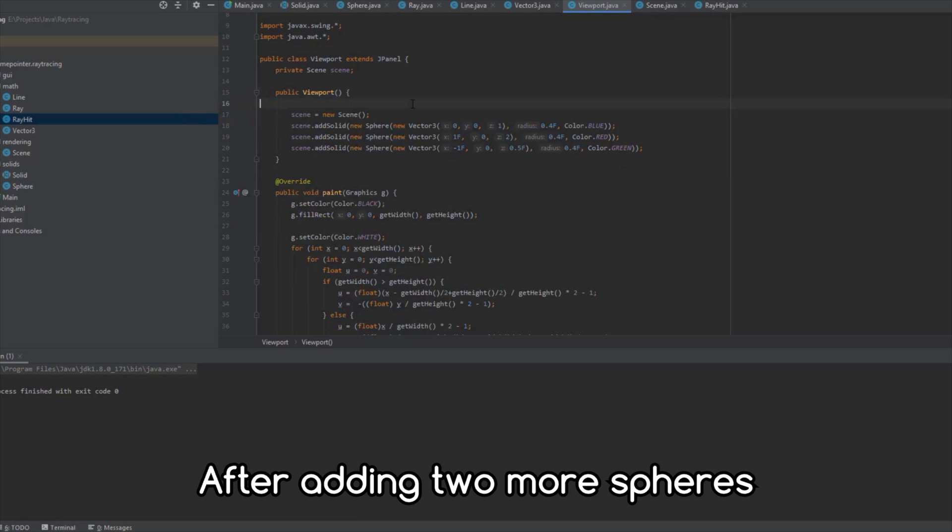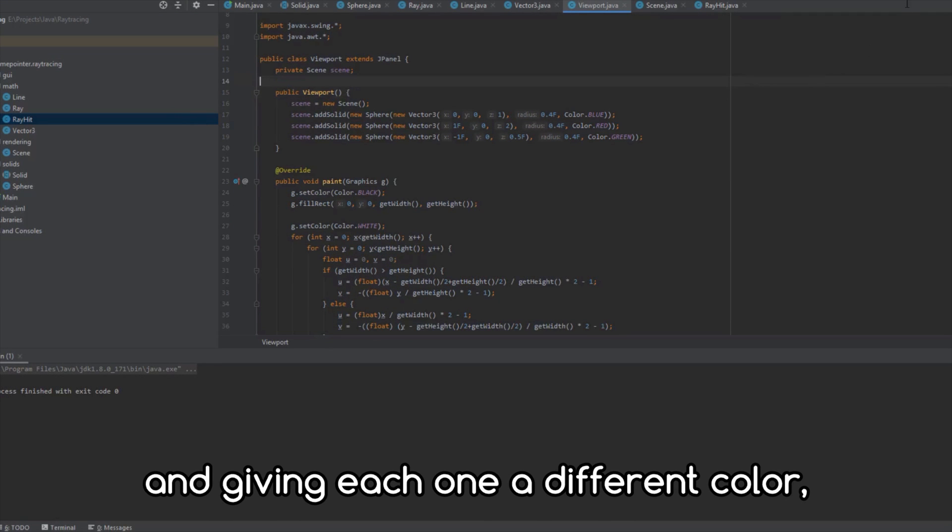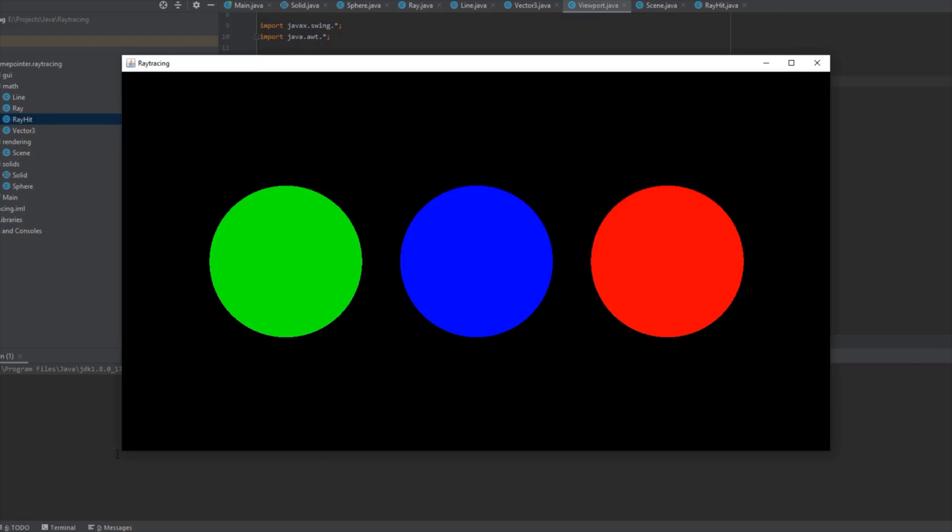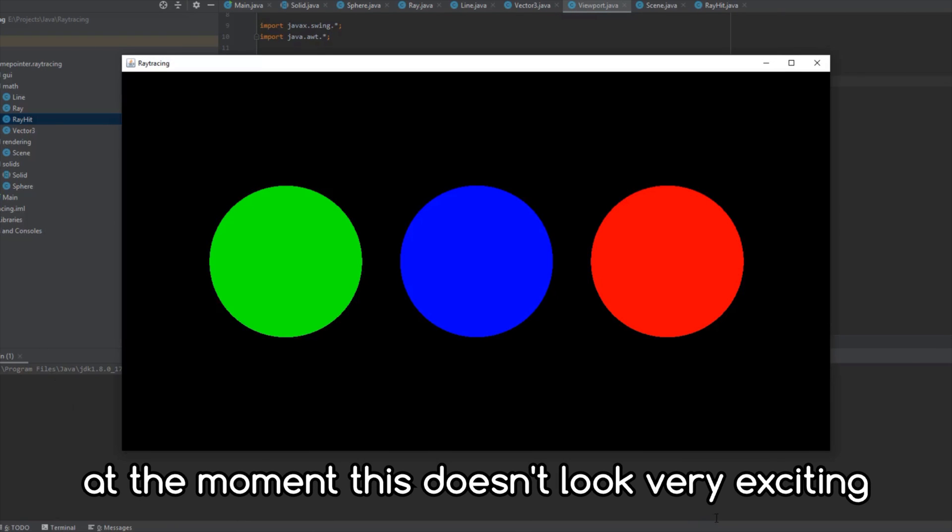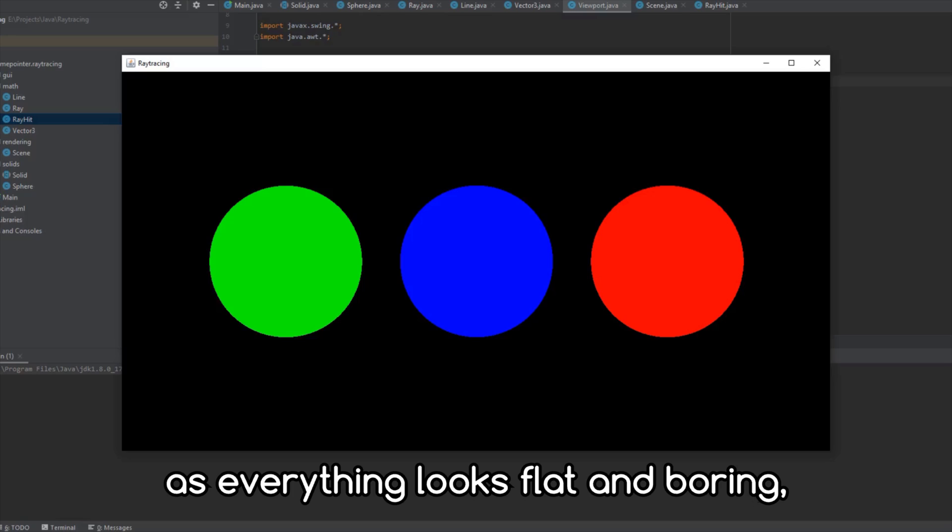After adding two more spheres and giving each one a different color, we get three colored circles. At the moment, this doesn't look very exciting, as everything looks flat and boring.